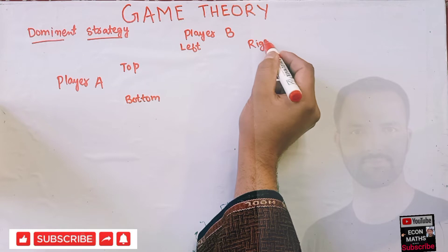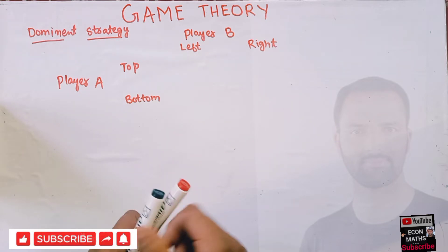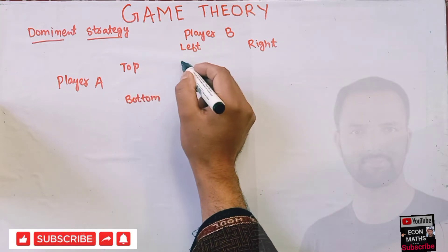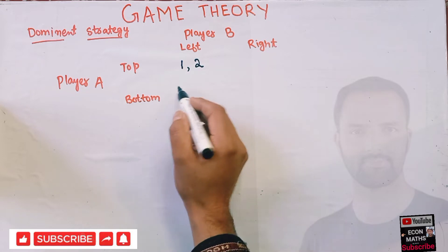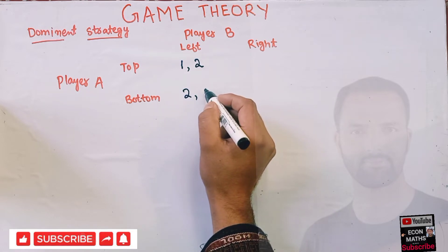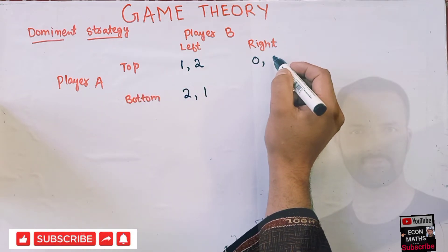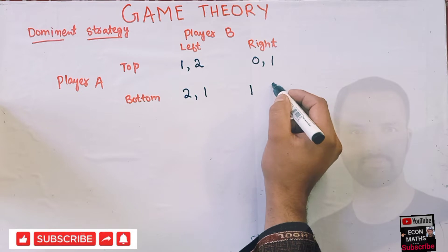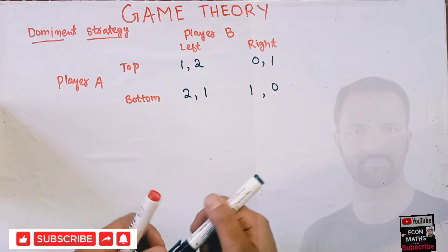So we have a two-player game and we want to see what is meant by dominant strategy. We are given the payoffs of each player. If player A chooses top and player B chooses left, player A gets one as payoff and player B gets two. If player A chooses bottom and player B chooses left, player A gets two and player B gets one. If player A chooses top and player B chooses right, player A gets zero and player B gets one. And the last cell is one and zero. This is the payoff matrix for player A and B.